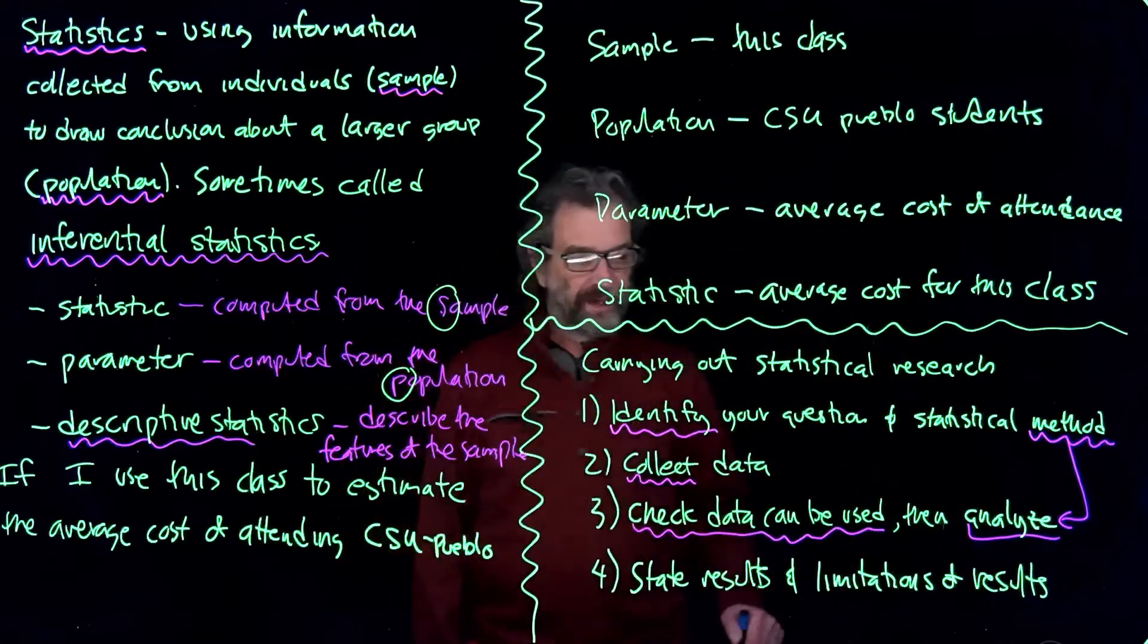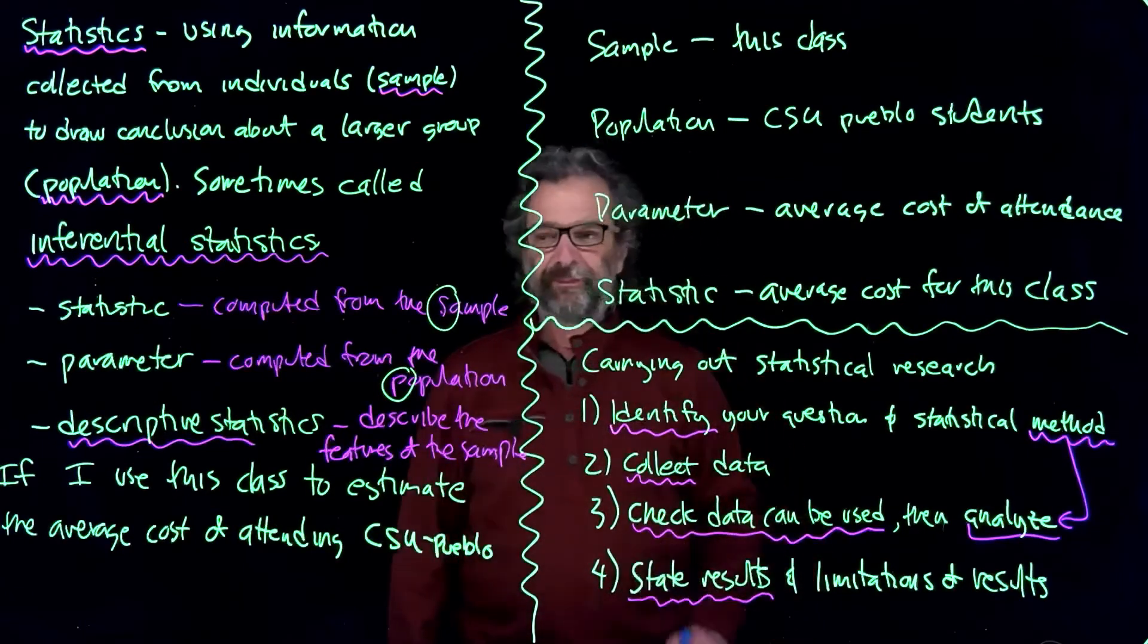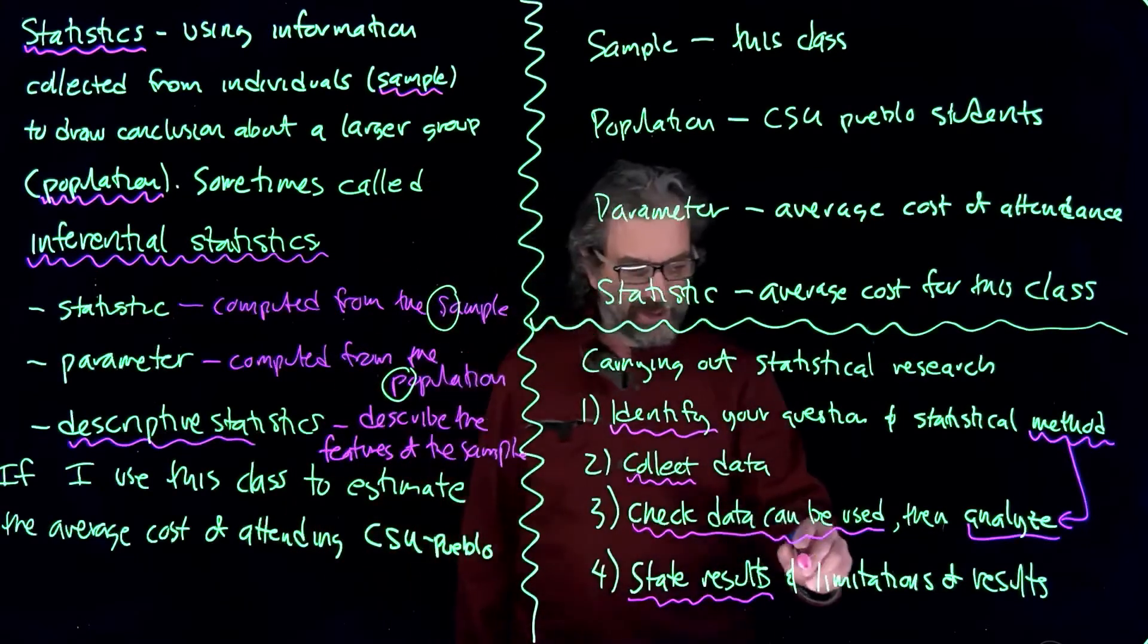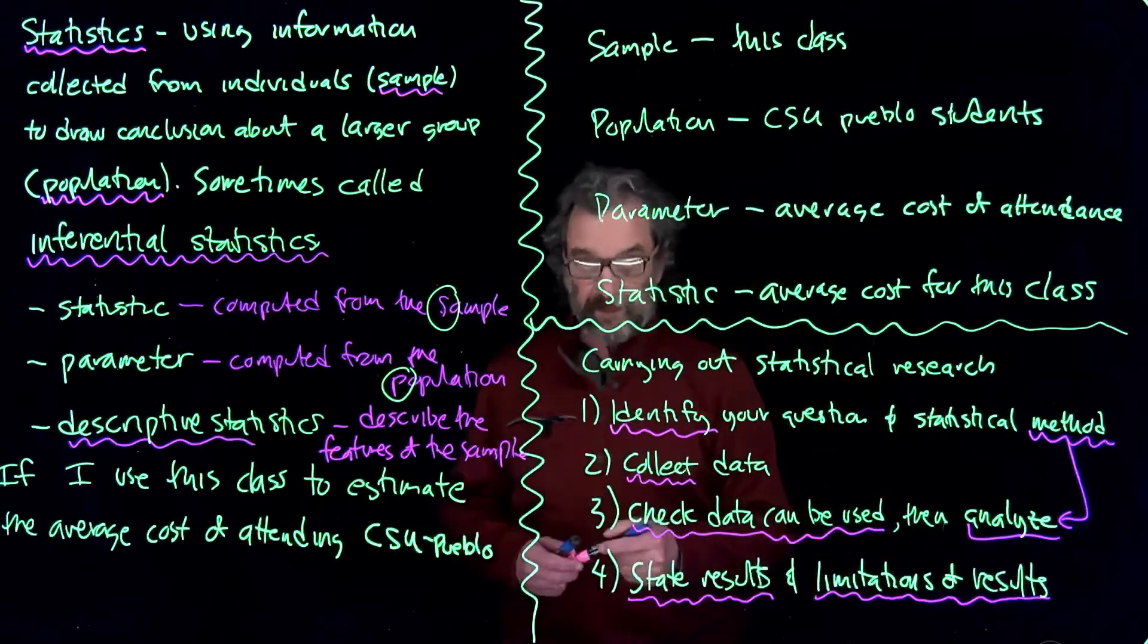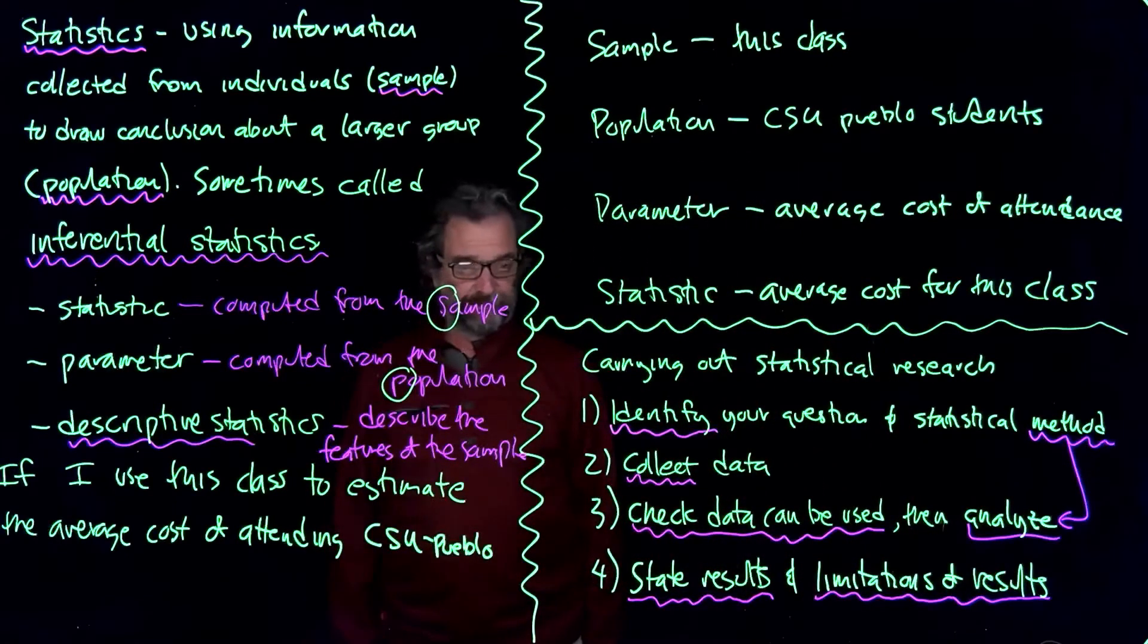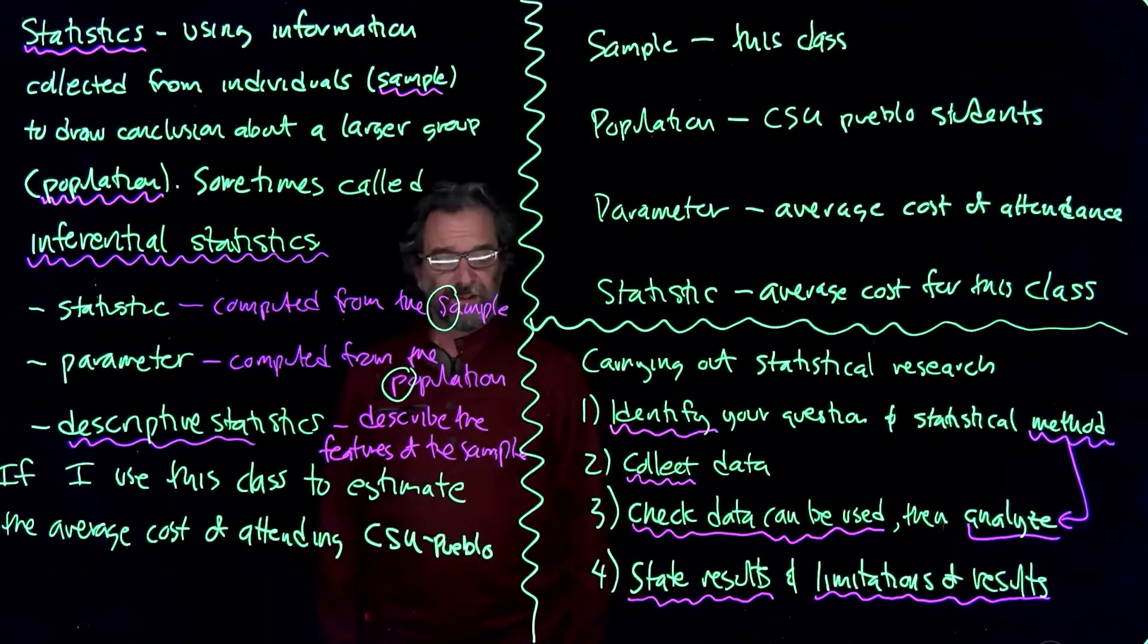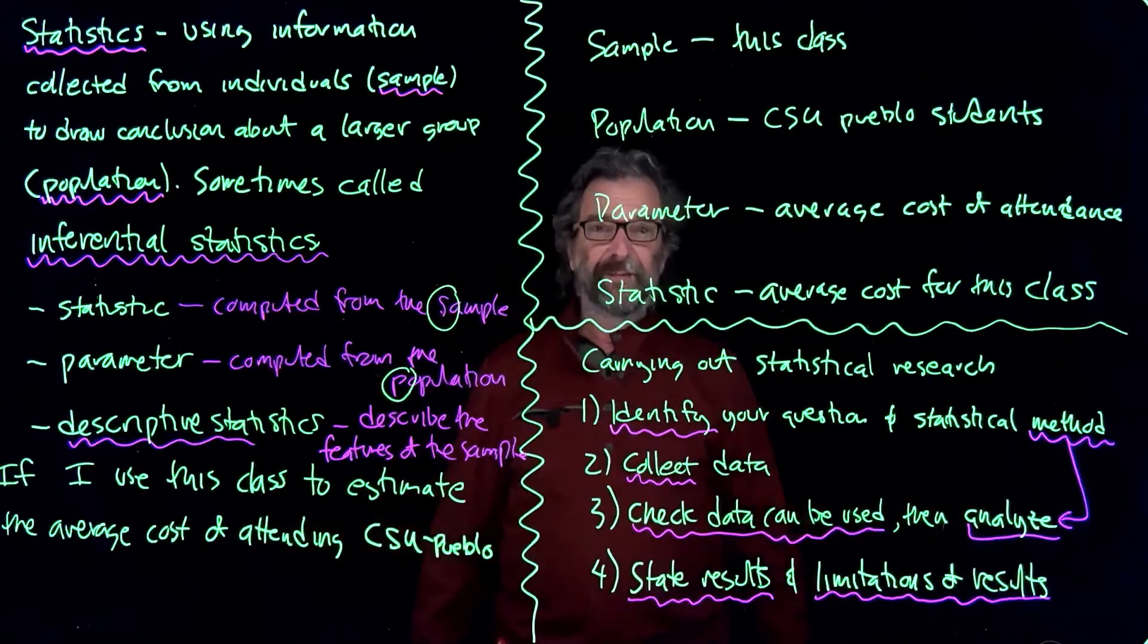And then at the end of the day, after you perform the analysis, state the results, usually in the context of the problem. So typically, if we were trying to figure out how much it costs to go to CSU Pueblo, you'd say based on my analysis, the average cost of going to CSU Pueblo is around $25,000, I'm just picking a number at random.